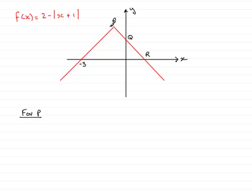So the coordinates of p will be negative 1 for x and the corresponding f of x value will be 2. So p has coordinates minus 1, 2.